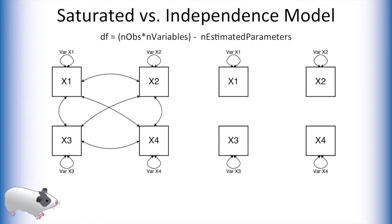The degrees of freedom for these models are calculated as such. We multiply the number of observations in a dataset by the number of manifest variables in our model, then subtract the number of estimated parameters. Let's assume we have 200 observations. Each of these models also has four manifest variables. What each model differs on is the number of estimated parameters.